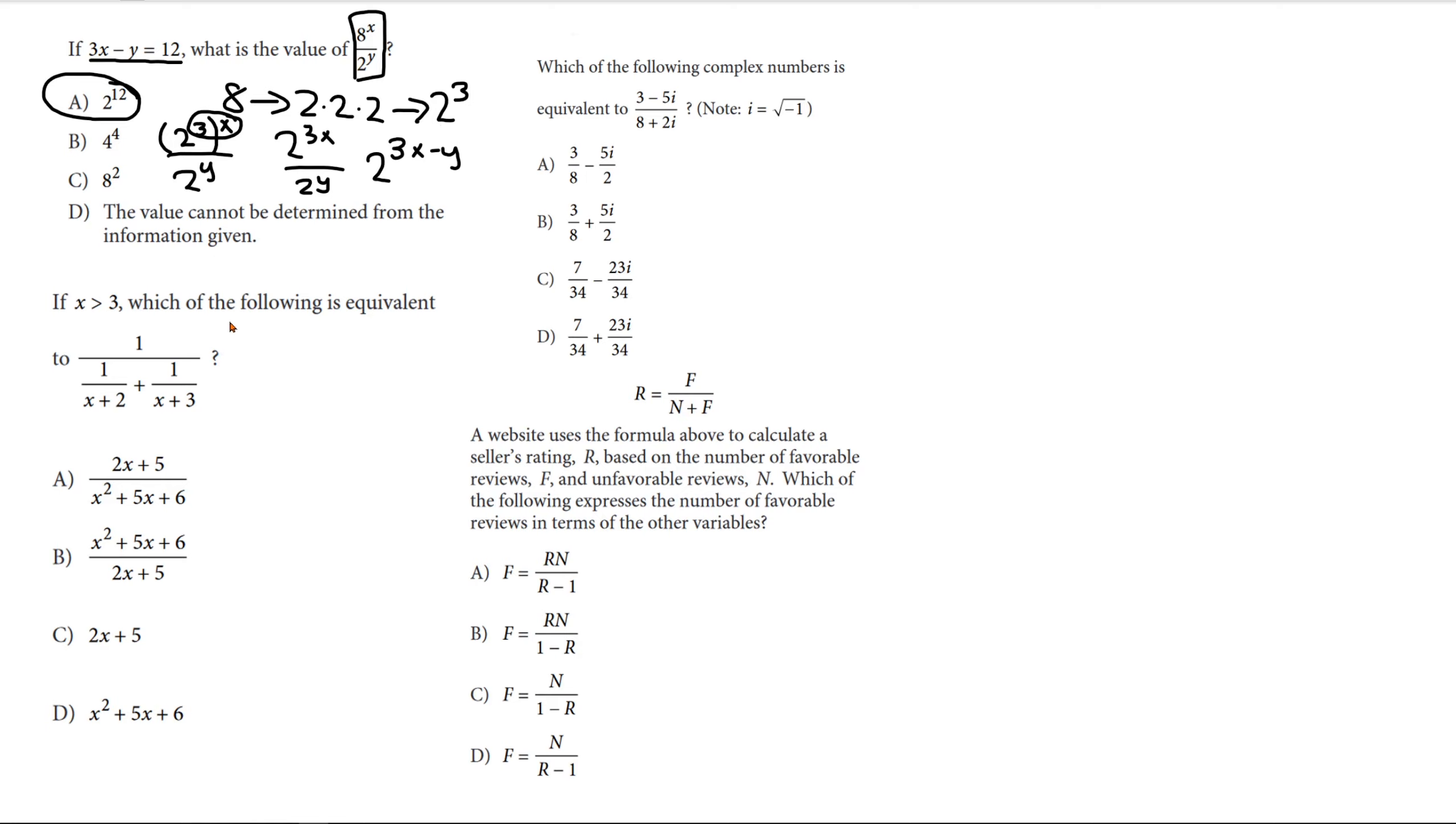Now, the second question asks us about complex fractions. Usually, with complex fractions, what we do is look for a common denominator. And in this case, it's going to be x plus 2 times x plus 3. Since x plus 3 is not divisible by x plus 2, and nor is x plus 2 divisible by x plus 3.